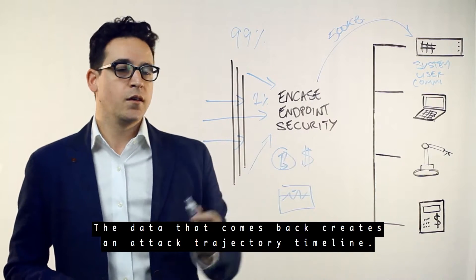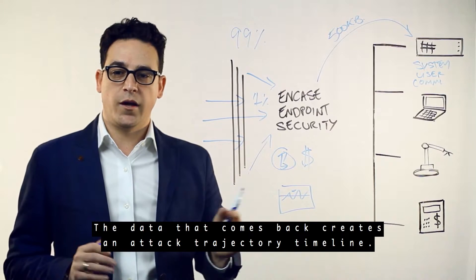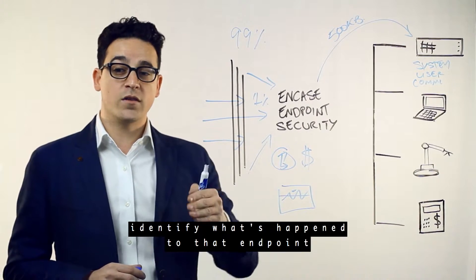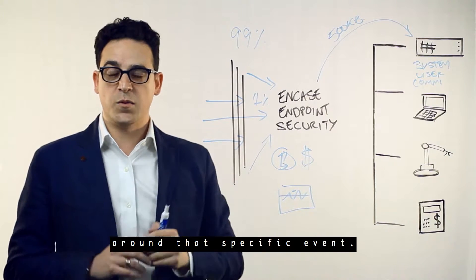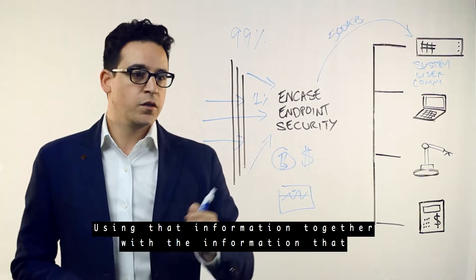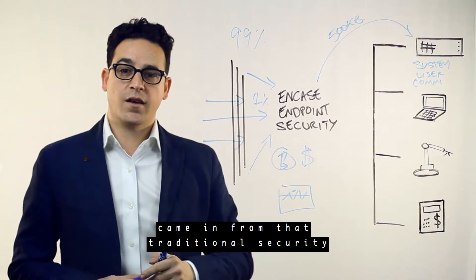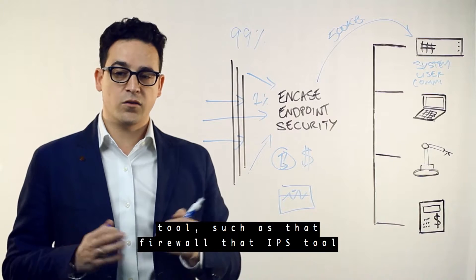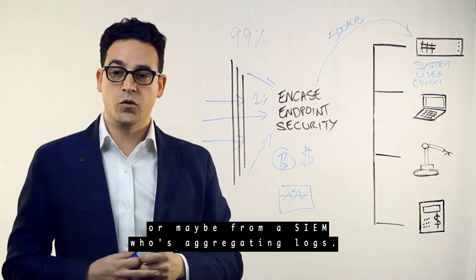The data that comes back creates an attack trajectory timeline. That means we can, on a timeline, identify what's happened to that endpoint around that specific event using that information together with the information that came in from that traditional security tool such as that firewall, that IPS tool, or maybe from a SIM who's aggregating logs.